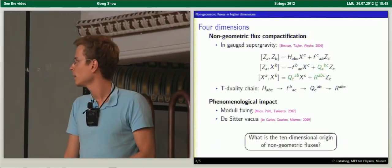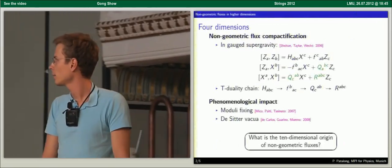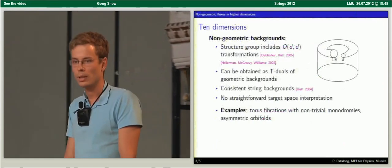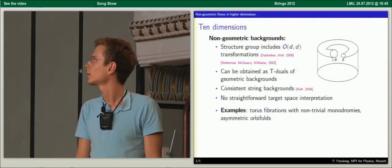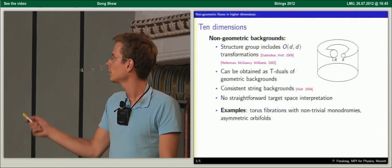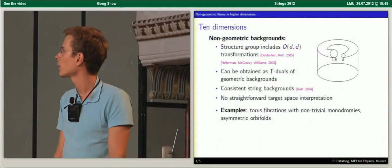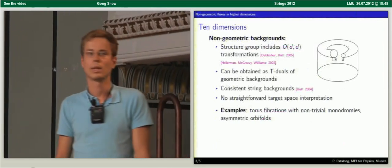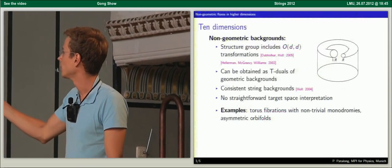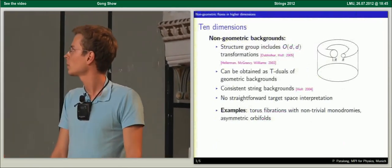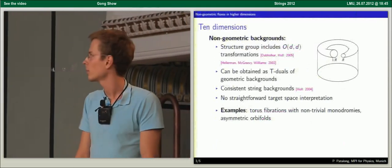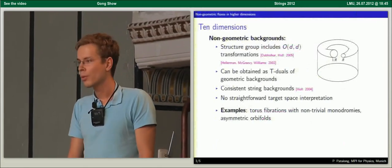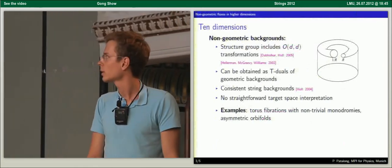In ten dimensions, string theory probes geometry differently than point particles. In certain backgrounds — non-geometric backgrounds — you extend the structure group to include also O(D,D) transformations or T-dualities. Most of these non-geometric backgrounds can be obtained as T-duals of geometric backgrounds, but not all of them. Nevertheless, they make some consistent string backgrounds with no straightforward target space interpretation. Examples are given by torus fibrations with non-trivial monodromies around the base circle, or asymmetric orbifolds.